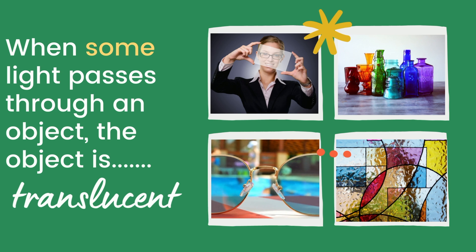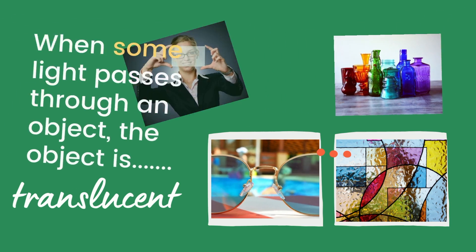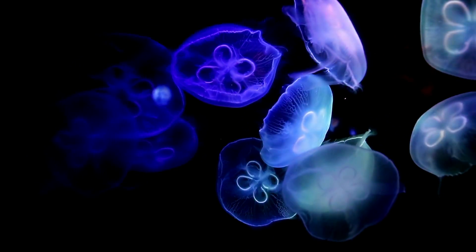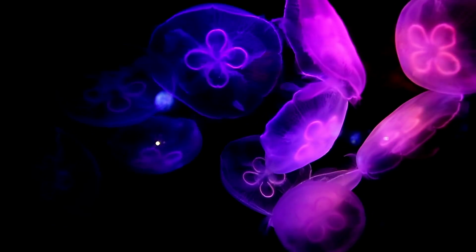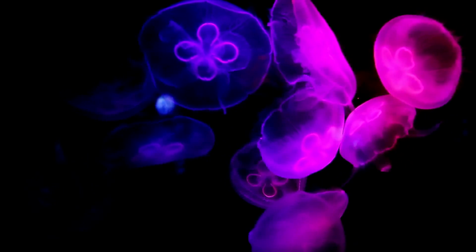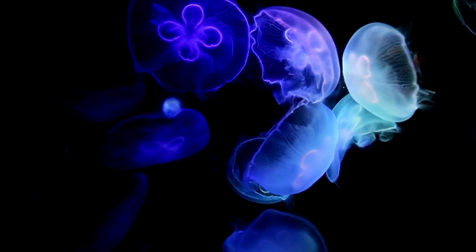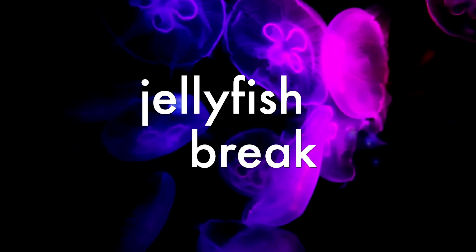Unless a window is a little grimy, frosted, or stained, then it's probably translucent. When only some light passes through an object, the object is translucent. You can kind of see through them, but what you see is maybe a little fuzzy, a little distorted, and the colors are a little different.